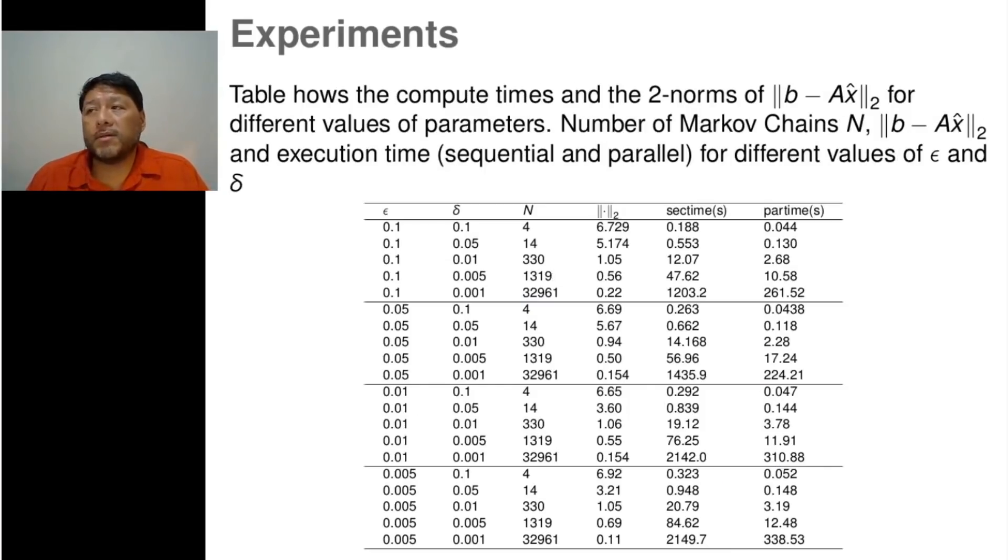This table shows the compute times of the both implementations. Sequential time and parallel time was computed using different values of the parameters epsilon and delta. The capital N is the number of Markov chains built each iteration. Indeed, parallel version has a better performance. However, accuracy obtained by means of residual norm is not encouraging.